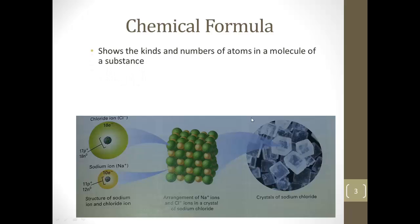So a chemical formula shows the kinds and numbers of atoms in a molecule of a substance, with the formula unit being the lowest whole number ratio of ions in an ionic compound.